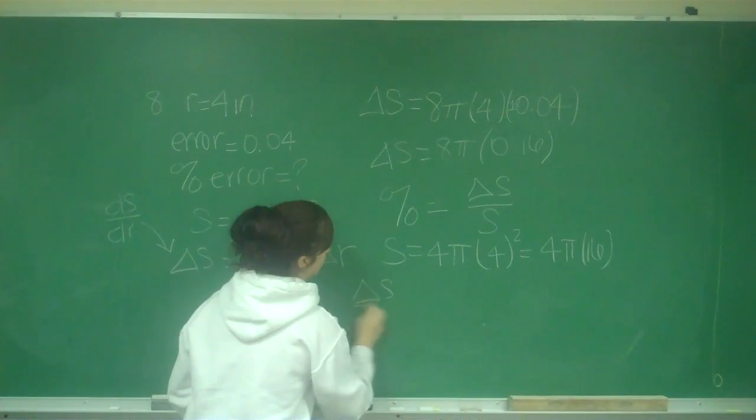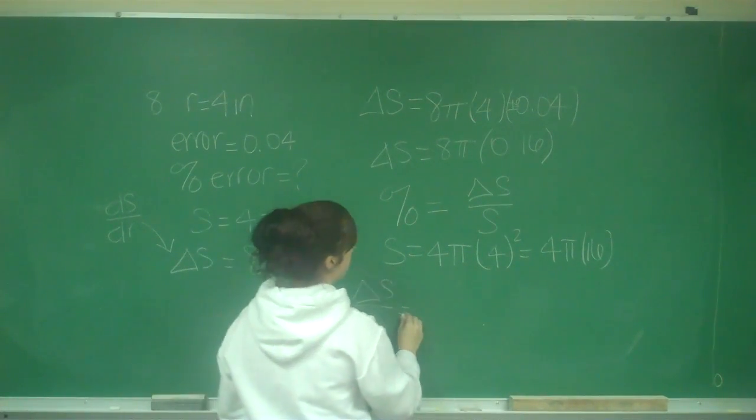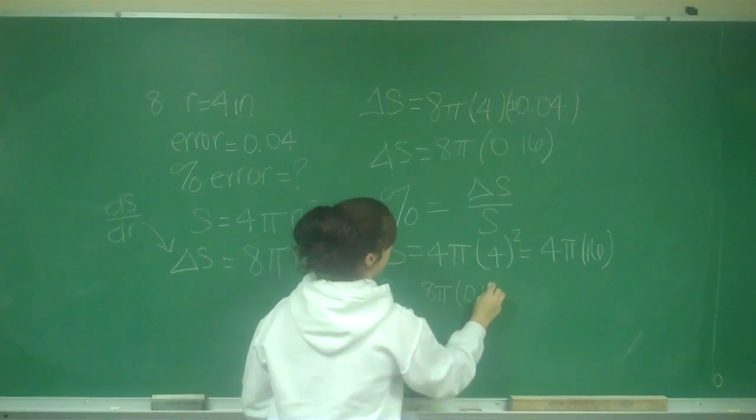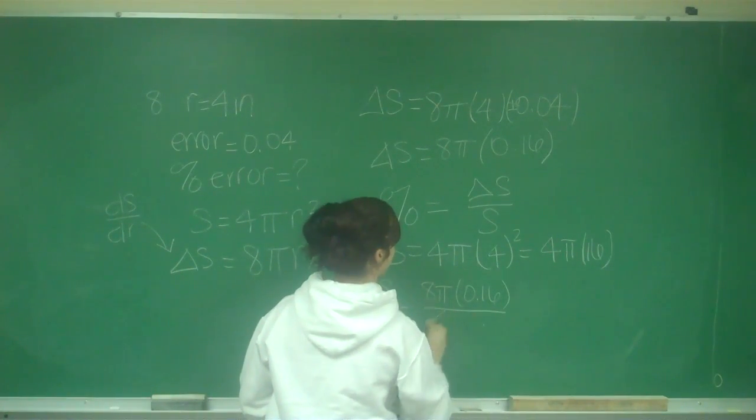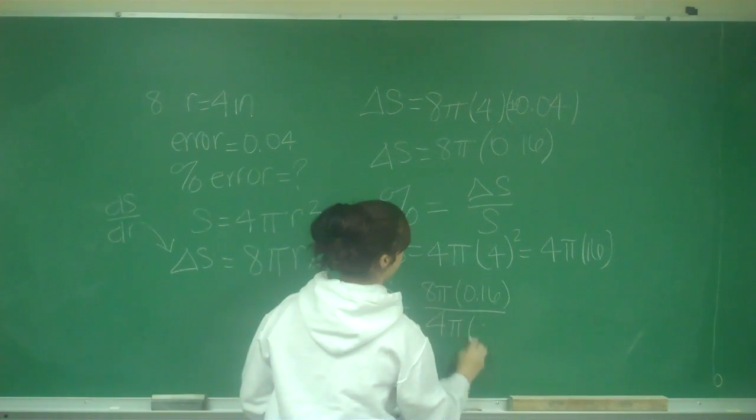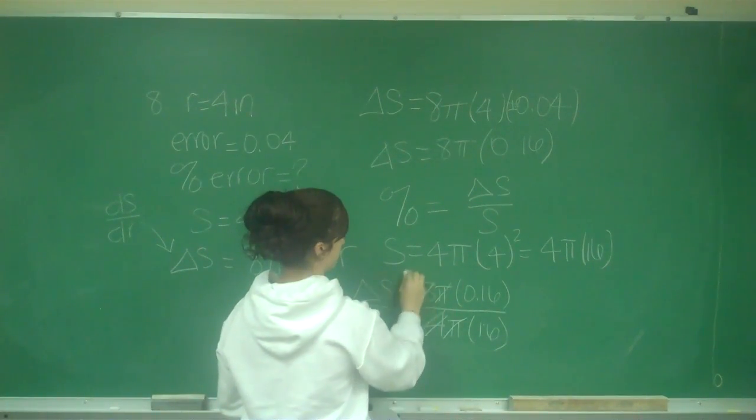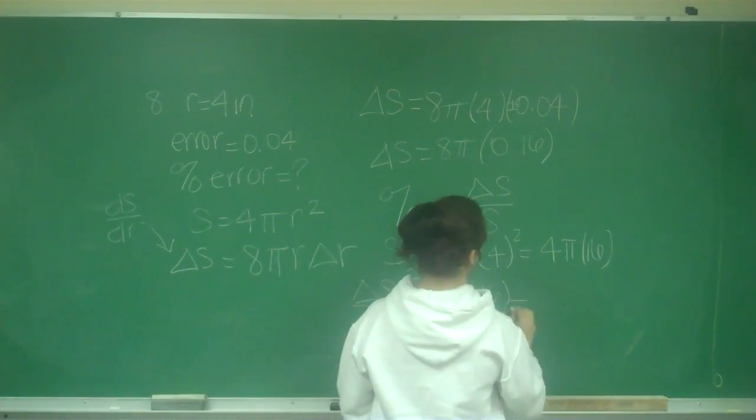So delta S over S will be 8 pi times 0.16 over 4 pi times 16. So pi is canceled, a 4, this becomes a 2, and this becomes a 0.01.